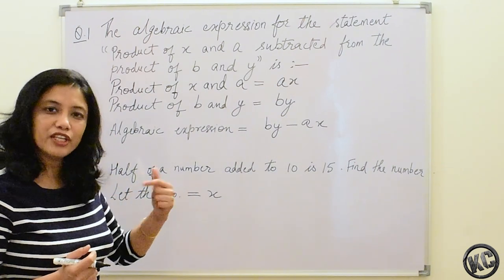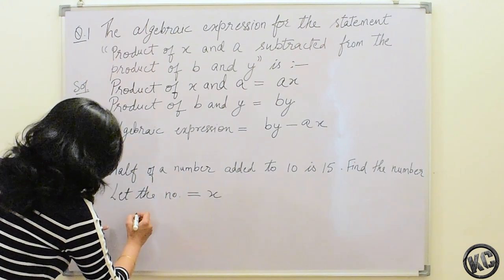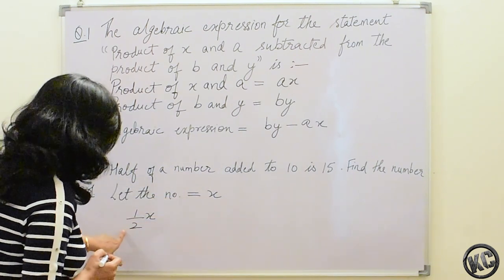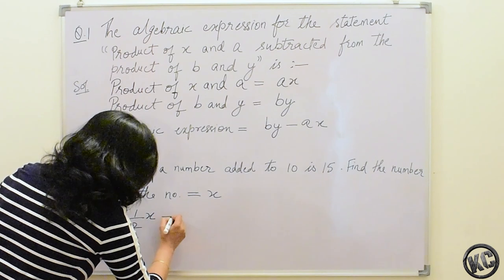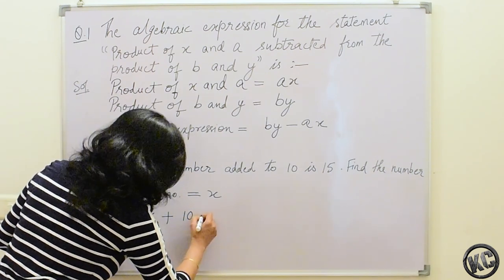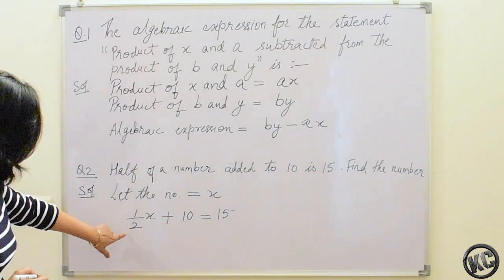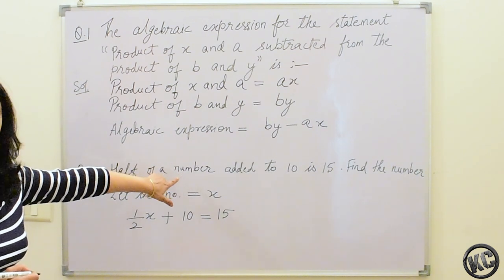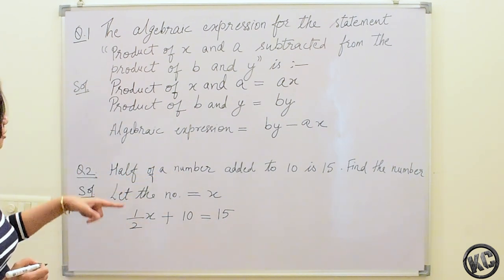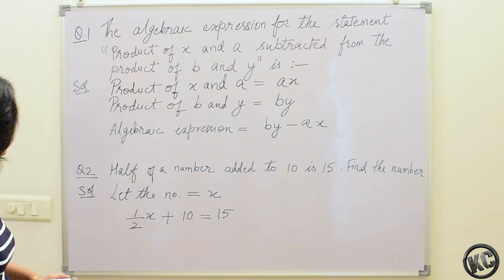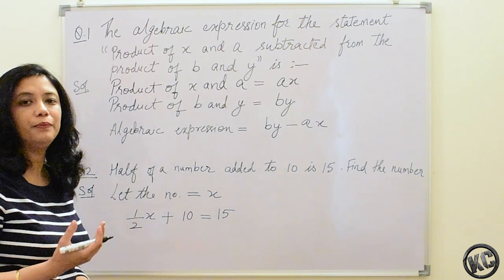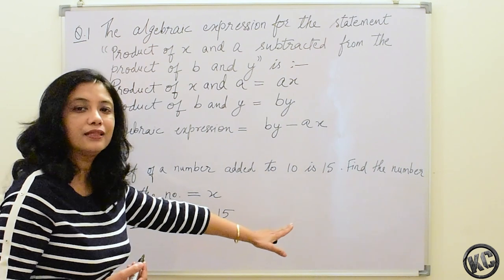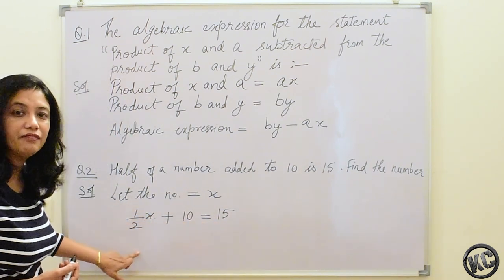We will write the equation according to it. Half of a number means half of x. So half of the number added to 10 is 15 — this is what is given to us. Now we will solve this further to find the value of x. We will take all the numbers one by one to the other side of the equals sign so that we can find the value of x.